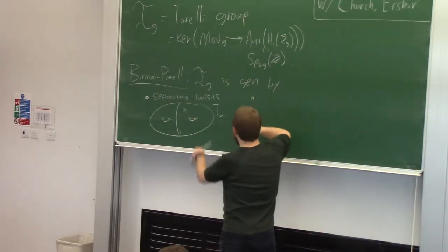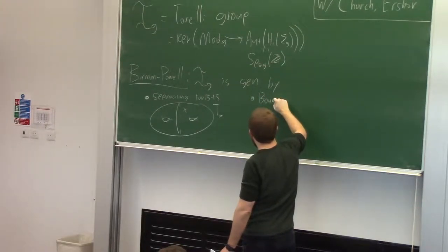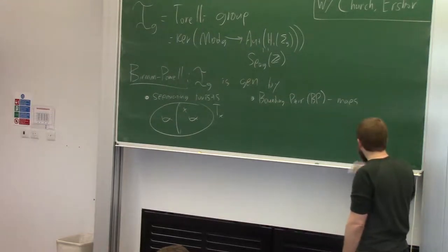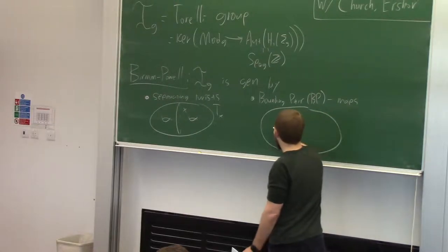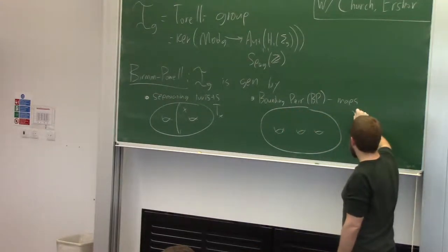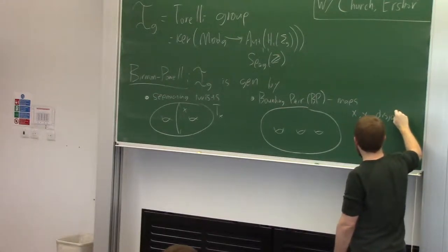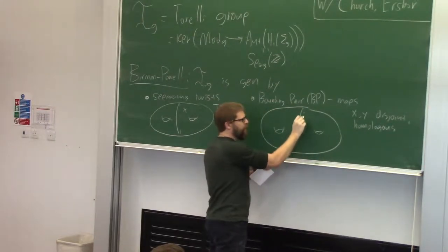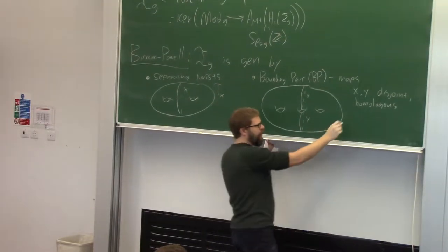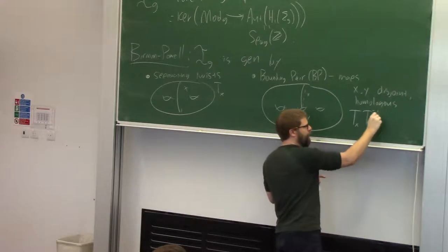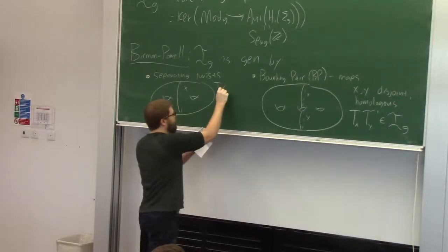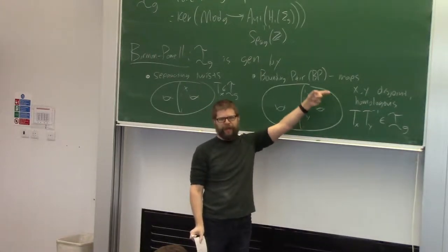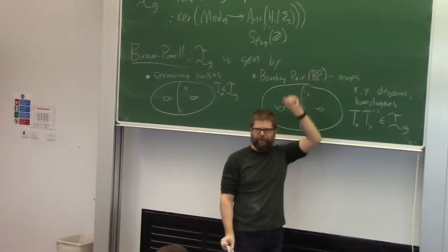Another element — these unfortunately do not generate in general — are what are called bounding pair maps, or BP maps. What you do is: consider a surface with genus 3, let x and y be disjoint and homologous curves. That means their union separates the surface. There's x and there's y, and if we take the Dehn twist about x and the Dehn twist about y inverse, that's an element of Torelli. Why? Simply because x and y are homologous, so the Dehn twists do the same thing in homology — we're doing something and undoing it — so this is inside Torelli.